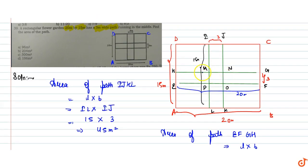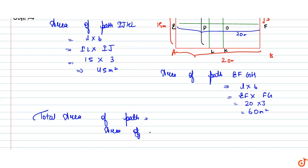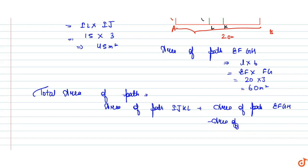When we combine path IJKL and path EFGH, we must subtract the overlapping intersection area MNOP. The total area of the path equals area of path IJKL plus area of path EFGH minus area of path MNOP. That is 45 meters squared plus 60 meters squared minus the intersection.